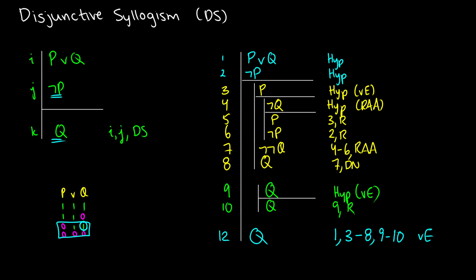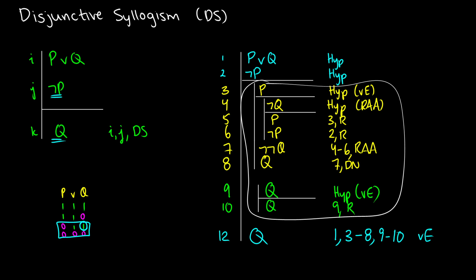So that was the proof of disjunctive syllogism. Now anytime you see p or q and not p, or p or q and not q, you know what you're going to get. These are just the steps we would leave out, but we know we can do this proof anytime we need it. This is a very powerful tool that can save you a lot of lines — it'll save you eight lines every single time you see this pattern.